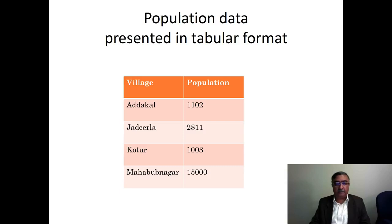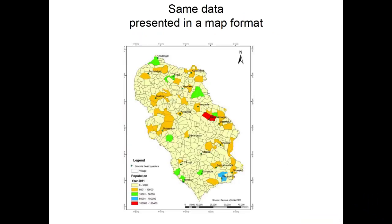But there could be another way. For example, you can present it as a map. This data, when presented in a map format, you can see here there are color codes — they reflect different population ranges. You can instantly make sense of the areas that are well populated, heavily populated, and ones that are under populated.